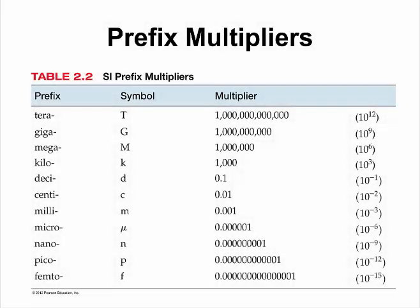There are some multipliers called prefix multipliers that will make big numbers appear smaller or small numbers appear bigger. Let me give you an example.